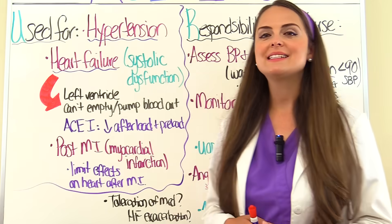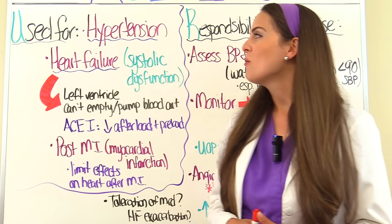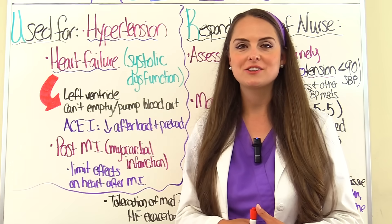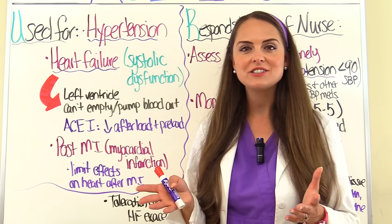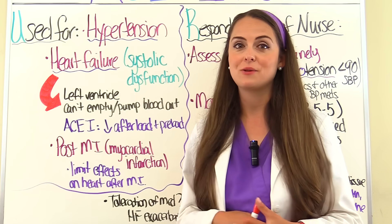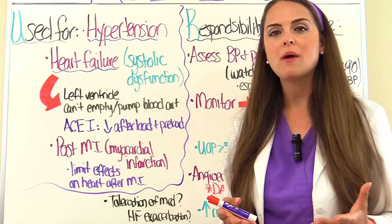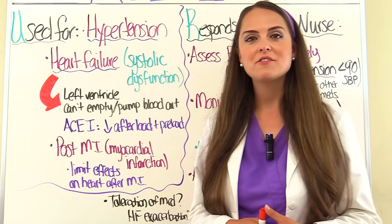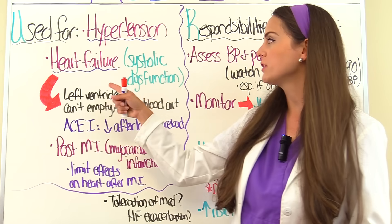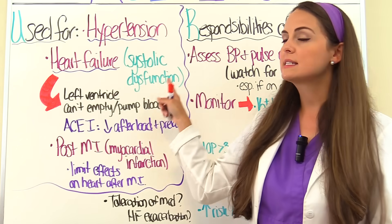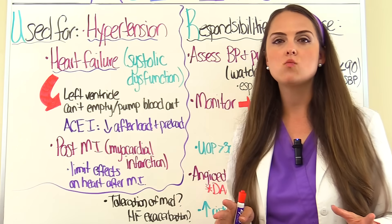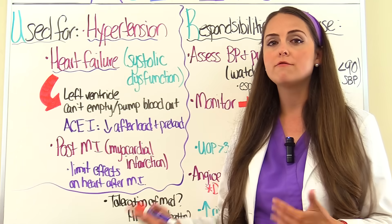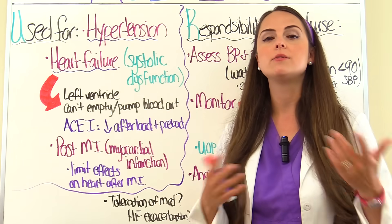ACE inhibitors are used to lower blood pressure, making them great for patients with hypertension. They're also used to treat heart failure, specifically systolic dysfunction — where the left ventricle can't effectively pump blood forward through the aorta. Instead, blood backs up into the lungs, leading to heart failure and fluid overload.